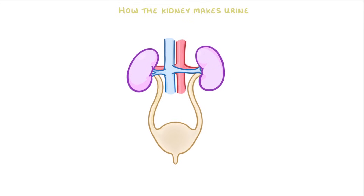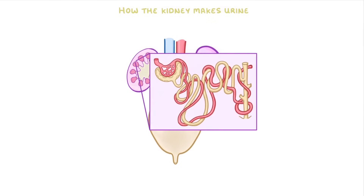Now, if we were to slice one of our kidneys down the middle, in what we call a cross-section, then it would look like this. And if we zoomed in again, like with a microscope, we'd see loads of these tiny structures, each of which we call a nephron.